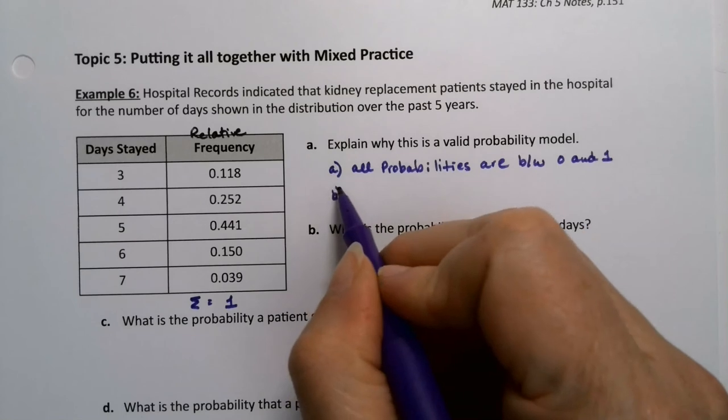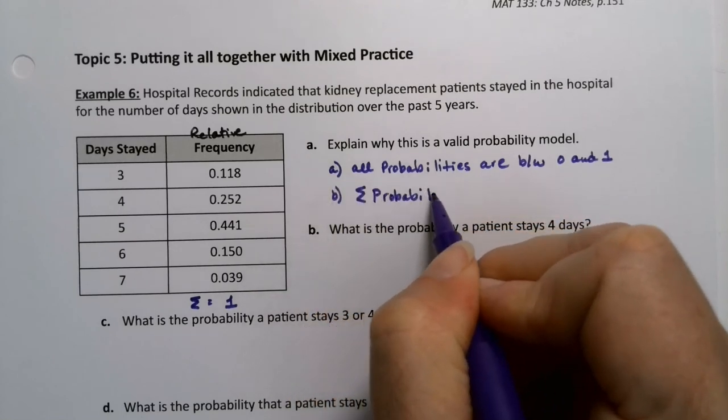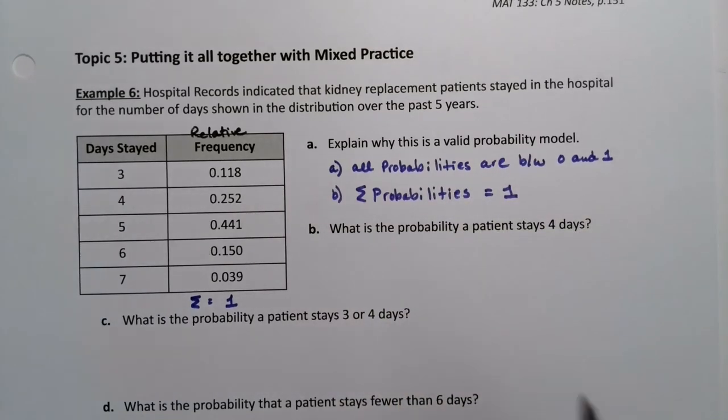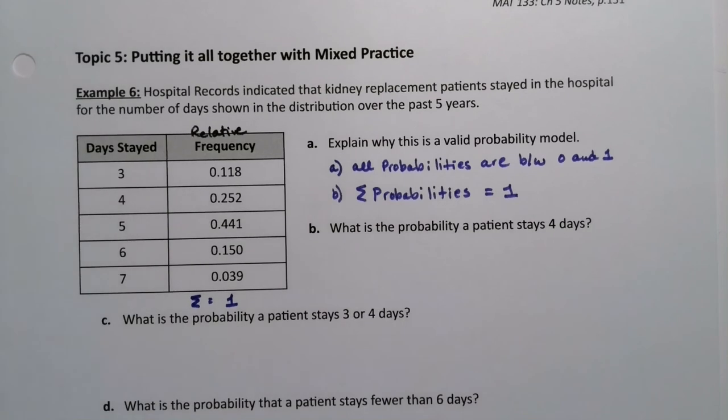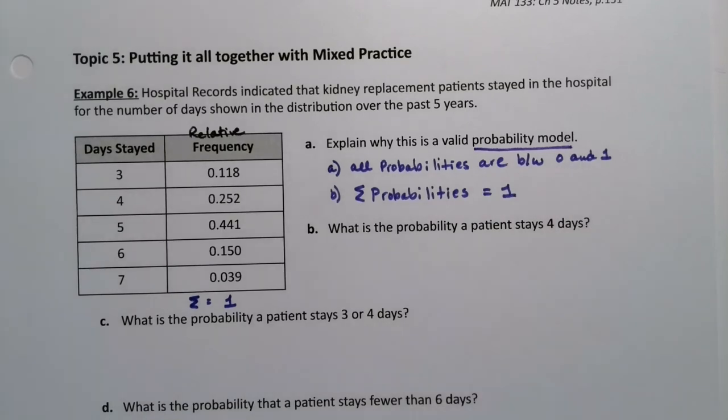The sum of the probabilities is equal to 1. Those are the two rules we first learned in section 5.1 for probabilities. All probabilities need to be between 0 and 1, and the sum of the probabilities for your sample space needs to be 1. That's what makes it a valid probability model. We'll see that again in chapter 6 as well.